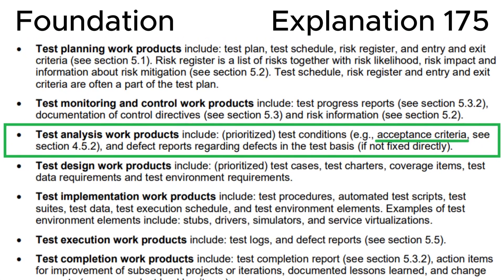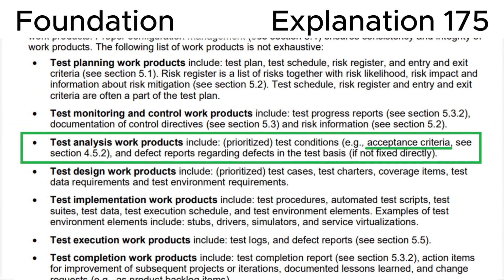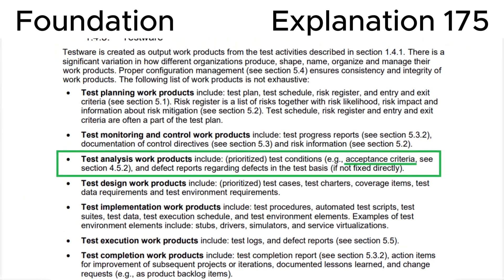Test analysis work products include test conditions — for example, acceptance criteria — and defect reports regarding defects in the test basis, if not fixed directly. This is fully consistent with the correct answer A.